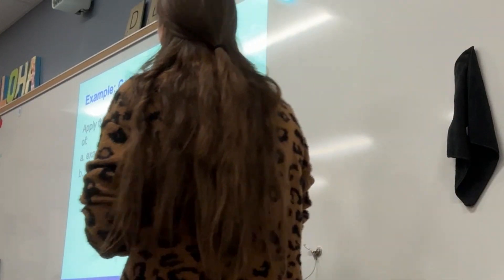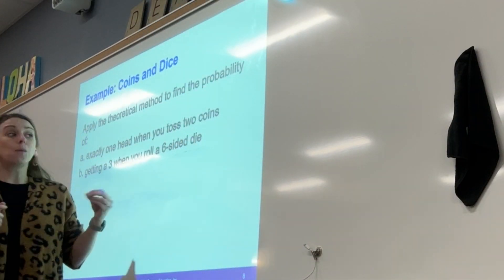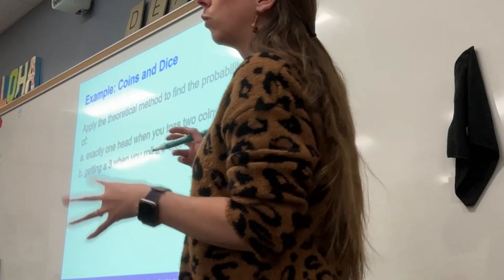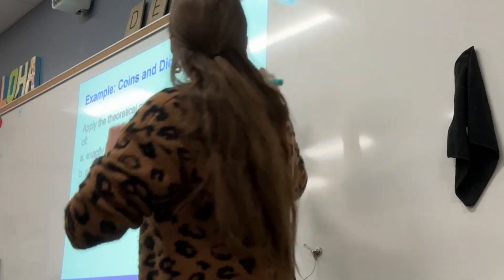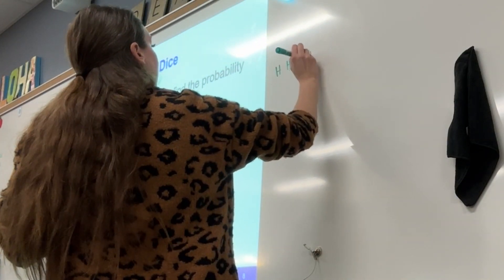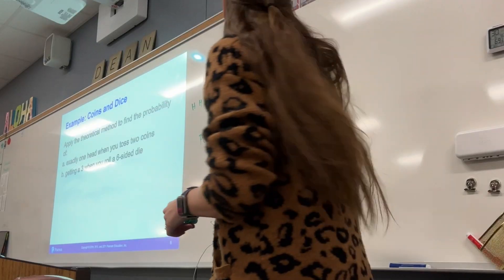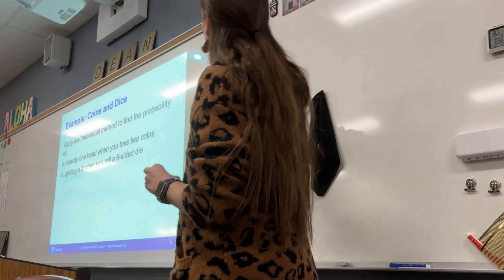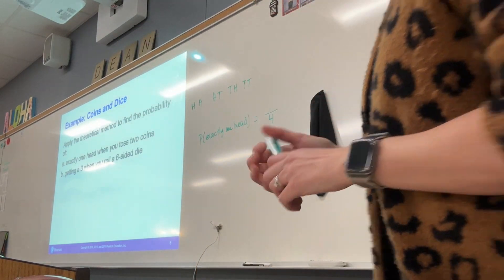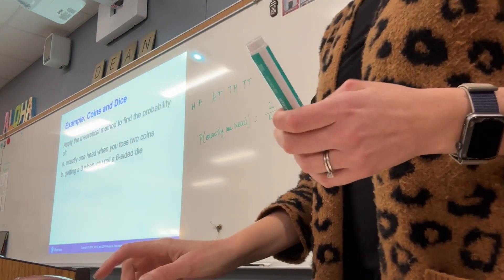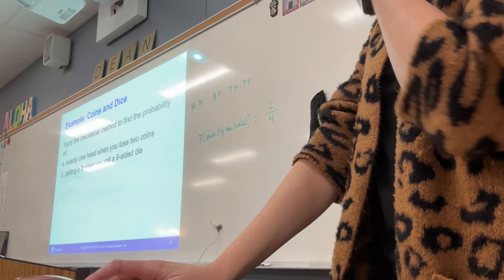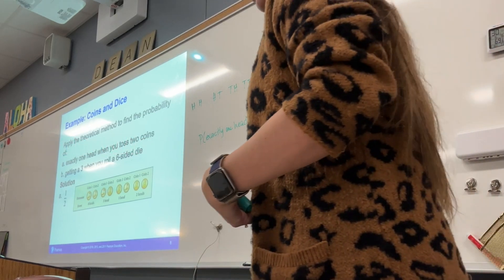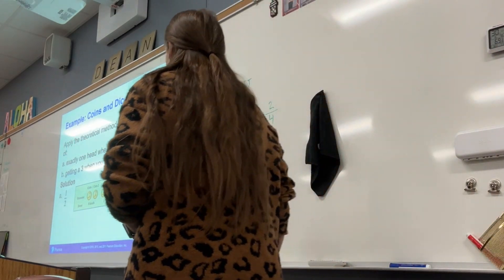We're looking at exactly one head when you're tossing two coins. The first thing we need to figure out is how many different outcomes we get when tossing two coins. Four. So what can we get? Heads-tails, tails-tails, tails-heads, heads-heads — four different outcomes. We want exactly one head. How many different outcomes have that? Two. So we'd have two over four, and then we reduce that. One half.